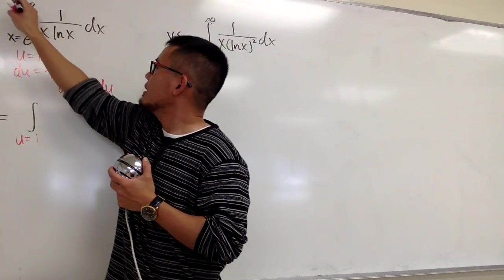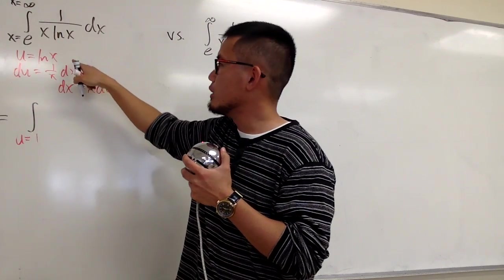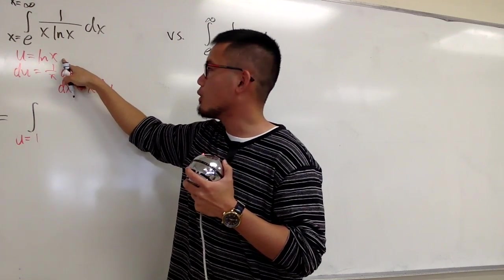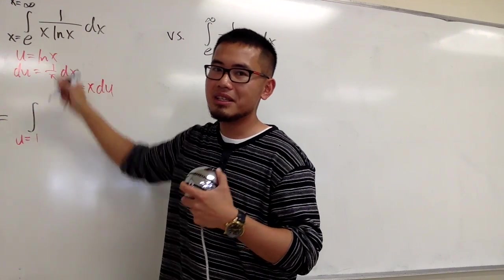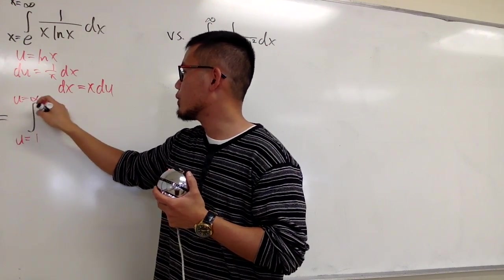And when we have the infinity here, this is for the x. But if you put down infinity into this x here, we know ln of infinity is still infinity. So in this case, u will also go to infinity.